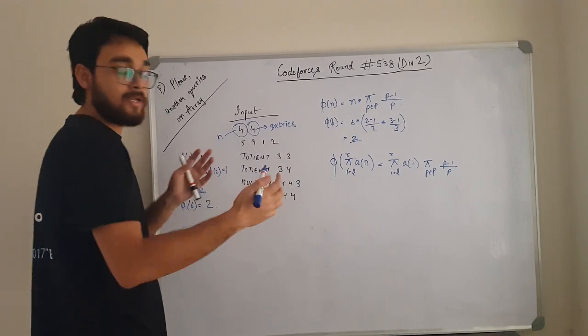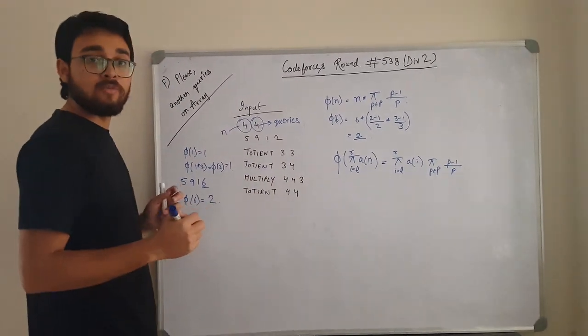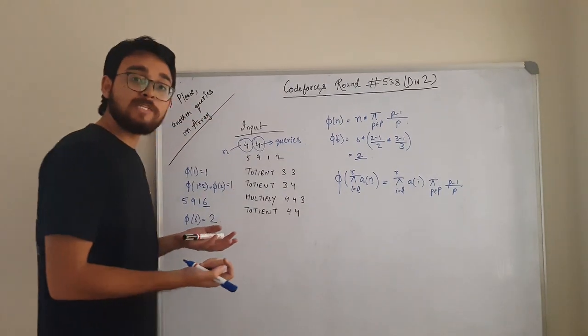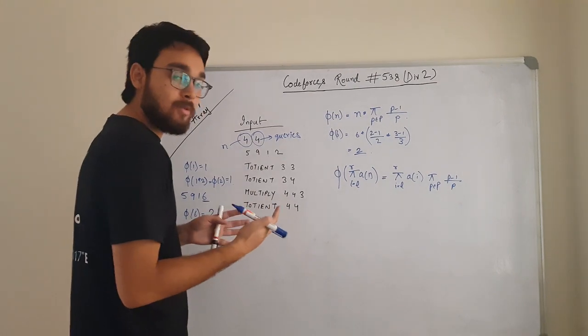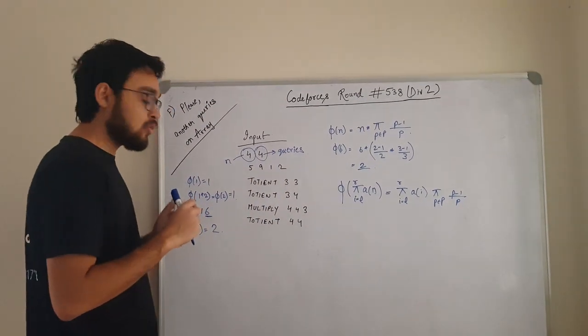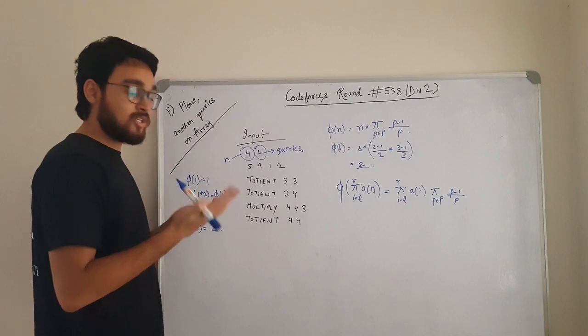And multiply is multiplying L to R with this value. So we will use segment tree to solve this problem. First of all, let us look into this problem without having lazy propagation in mind. What is going to be the structure?